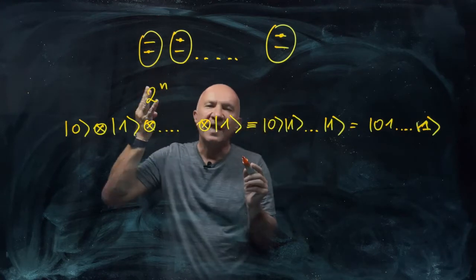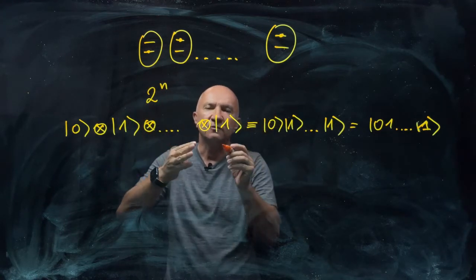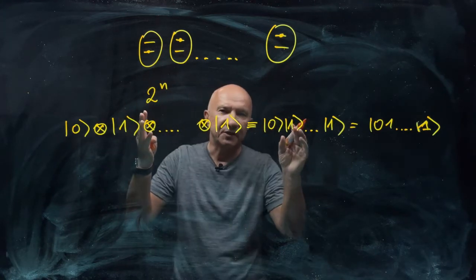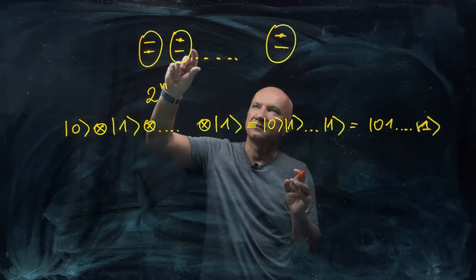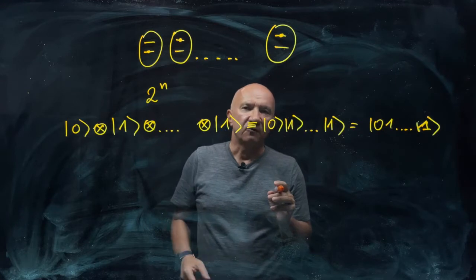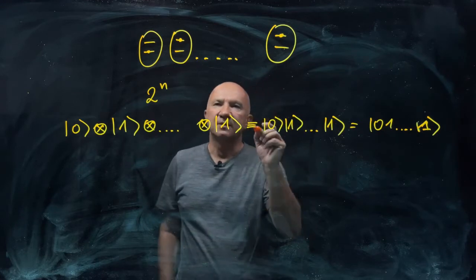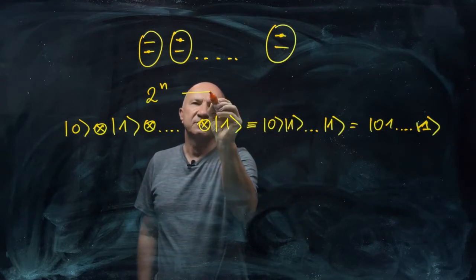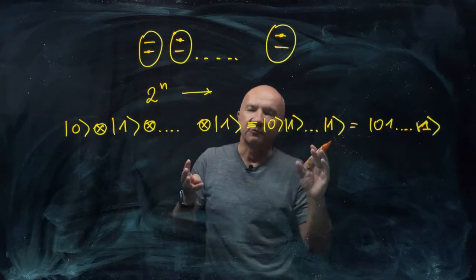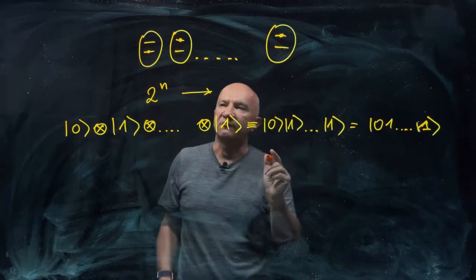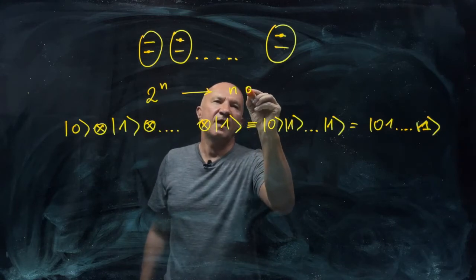But you see, you need at most n operations to explore all possible basis states, right? So you can just go to every single qubit and put it either in 0 or 1, at most n operations. And with n operations, you can explore the whole configuration space of 2 to the n different configurations.